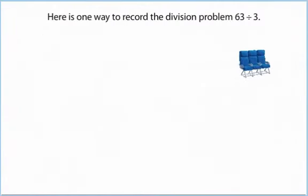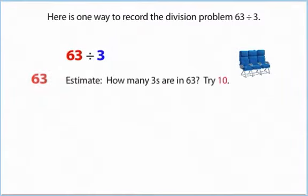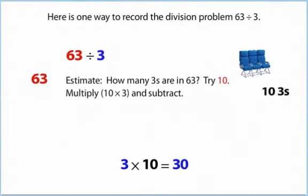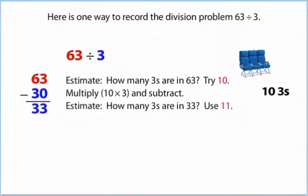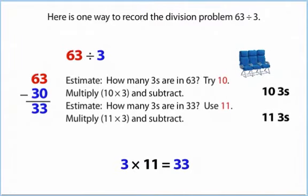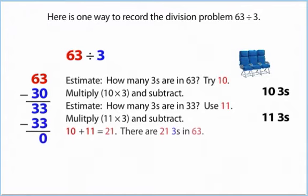Here is one way to record the division problem 63 divided by 3. Estimate how many threes are in 63, try 10. Multiply 10 times 3 and subtract. Estimate how many threes are in 33, use 11. Multiply 11 times 3 and subtract. 10 plus 11 equals 21. There are 21 threes in 63.